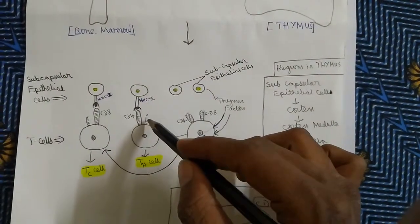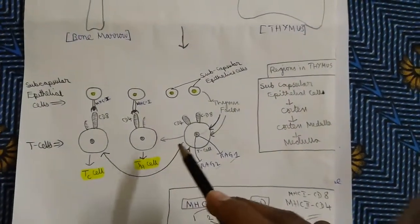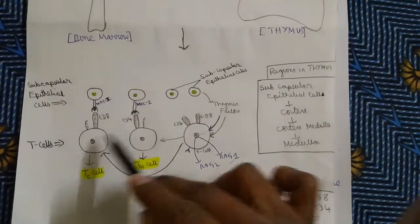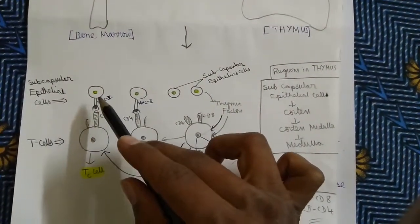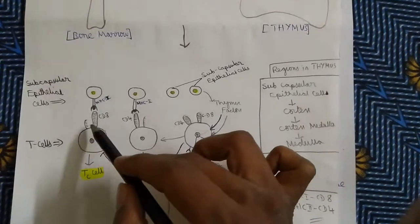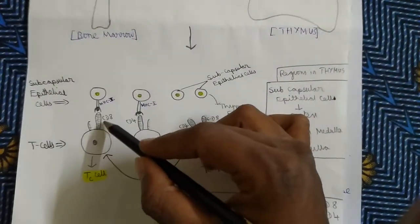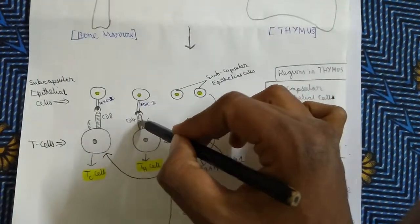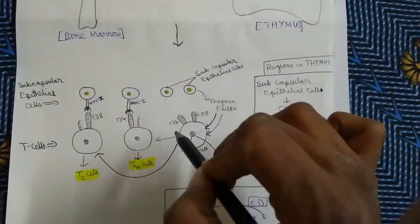And gradually, the CD8 receptor disintegrates. In the other case, the ordinary T-cell, which has both CD4 and CD8, reacts with the MHC-1 receptor of the epithelial cell and gets converted into a TC cell, and gradually the CD4 molecule is disintegrated. So, when CD8 reacts with MHC-1, it becomes TC. When CD4 reacts with MHC-2, it becomes TH. In this way, ordinary T-cells get converted into either TC or TH.